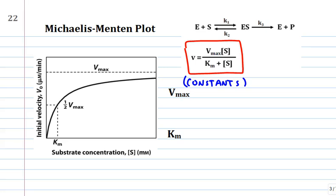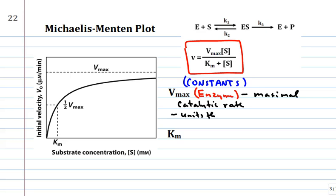Vmax is a constant related to the enzyme. Vmax is the maximal catalytic rate, and it has units the same as velocity — some amount or concentration per time. That makes sense because Vmax is the maximal velocity.